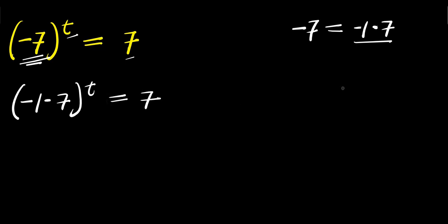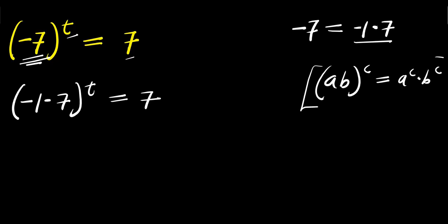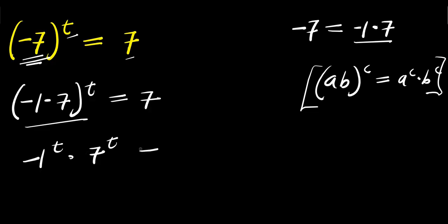Now if you have a times b raised to the power of c, this equals a to the power of c times b to the power of c. Applying this particular identity, you are going to have negative 1 to the power t times 7 to the power t equals 7.